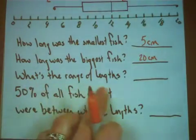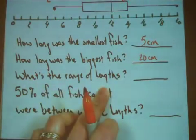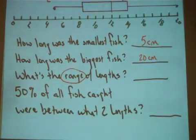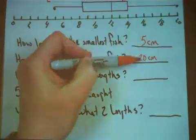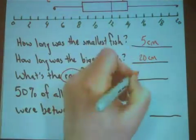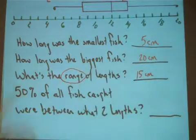Well, what's the range of the lengths of the fish that I caught? Do you remember how to find a range? You take these two extreme values and you find their difference. 20 minus 5 is 15 centimeters.